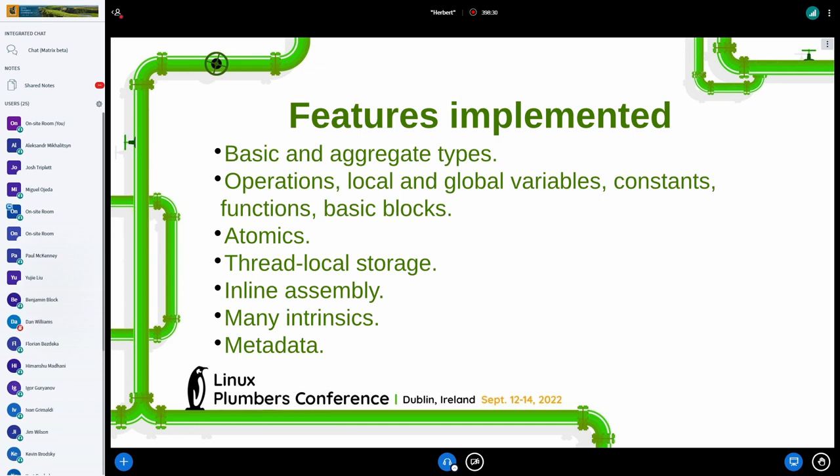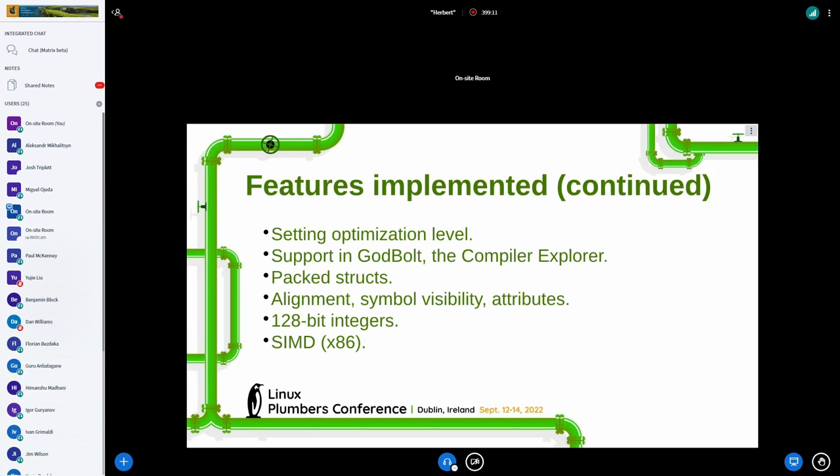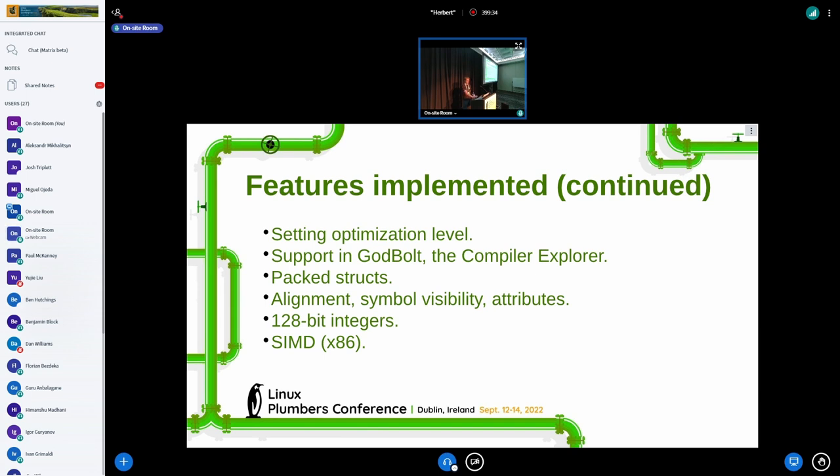So, here's a summary of the features that are implemented in the GCC code gen. All the basic stuff like variables and types and functions, that's all implemented. We also have implemented support for atomics, thread-local storage, inline assembly. Many intrinsics and SIMD intrinsics that were implemented because there was no equivalent in GCC to some of the LLVM intrinsics. The metadata that we can write in the object files. We support setting the optimization level. Also, if you want to try the GCC code gen right now, you can do it without having to compile GCC yourself and installing the project. You can try it in the Godbolt Compiler Explorer. So, that's pretty neat. And, as mentioned earlier, we support packed structs, symbol alignment, symbol visibility, and function and variable attributes. We have 128-bit integers and SIMD support for X86.